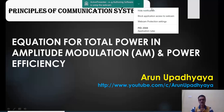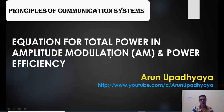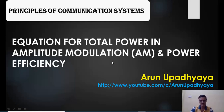Hello everyone. Welcome to this video where I am going to explain the standard equation for total power in amplitude modulation. As you are aware, in the standard equation of AM — that is double sideband full carrier — we actually transmit three components: the upper sideband, lower sideband, and unmodulated carrier. We will discuss the power required to transmit AM, and also power efficiency in this video.